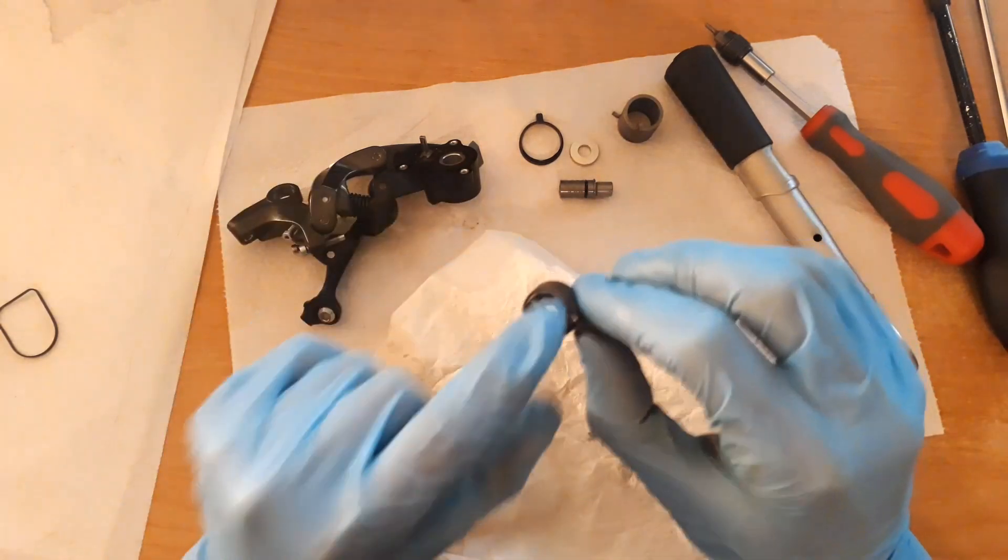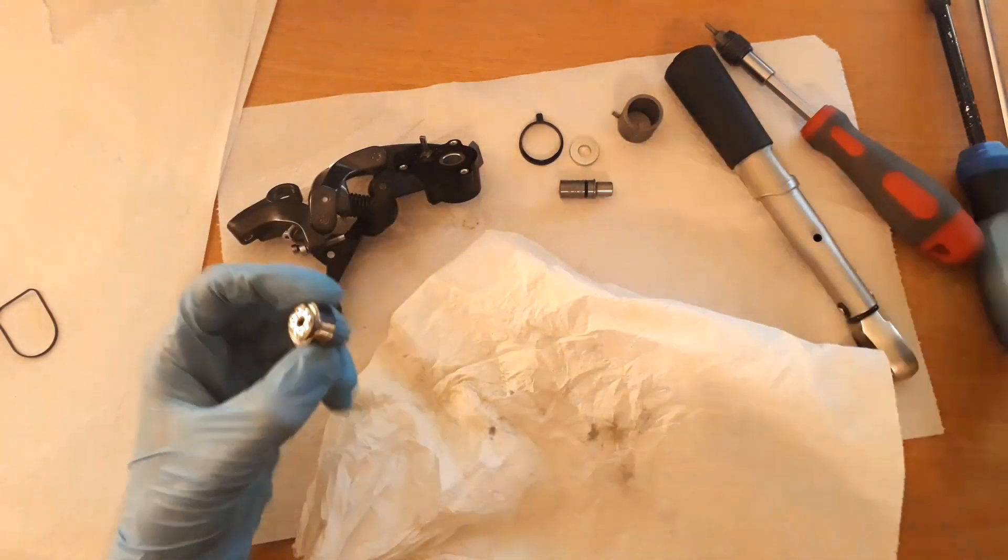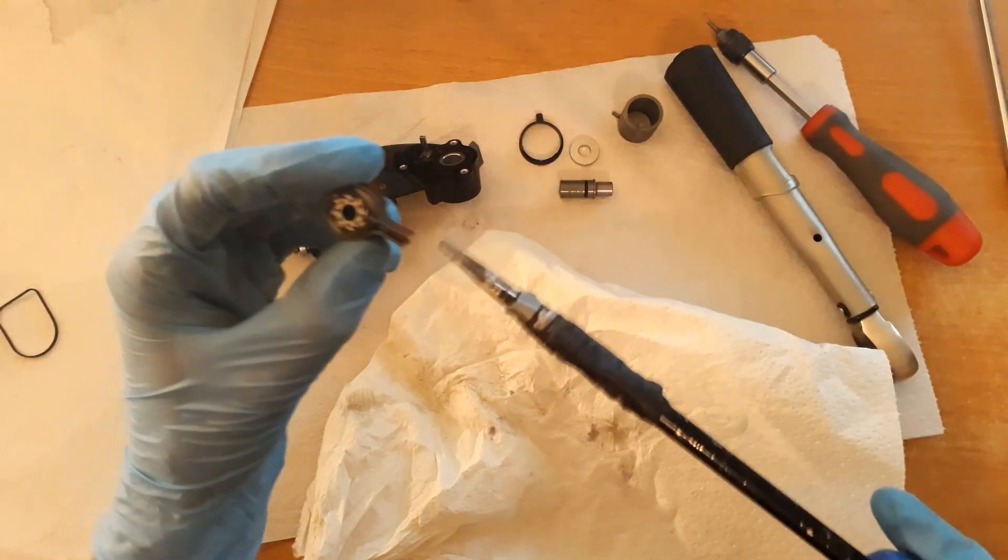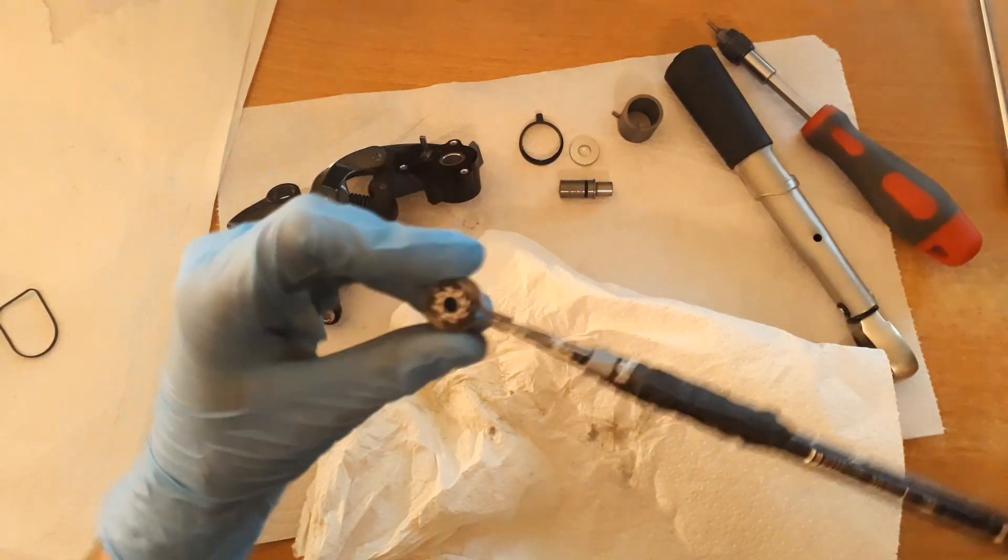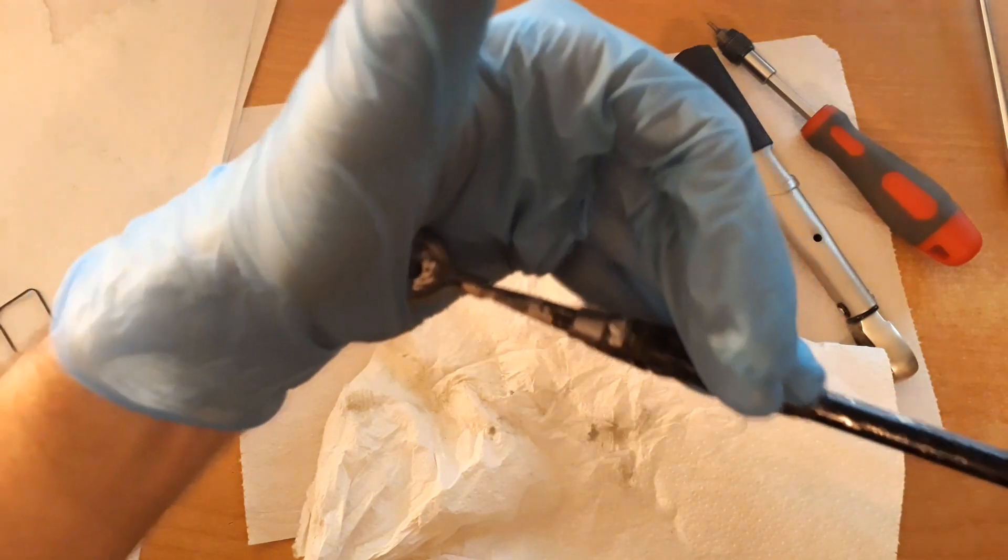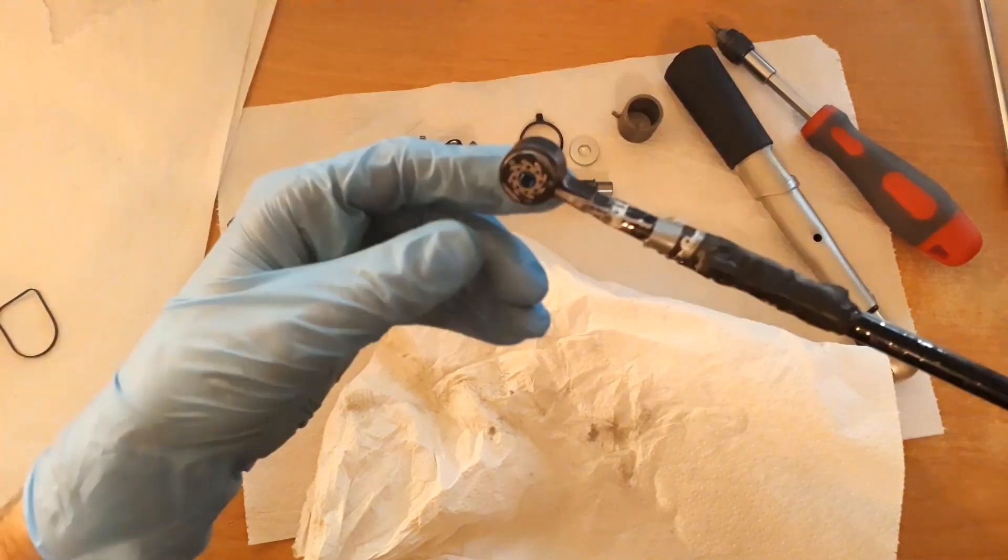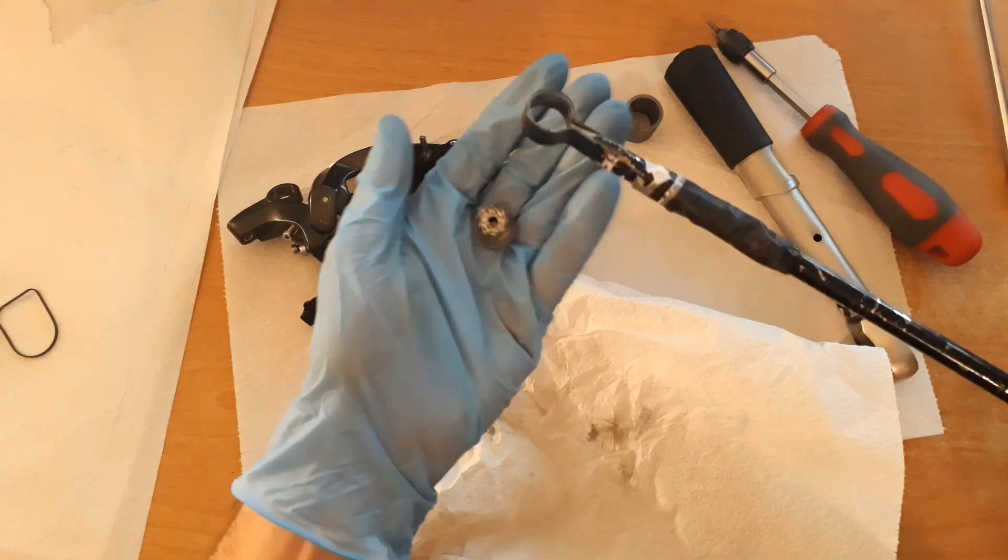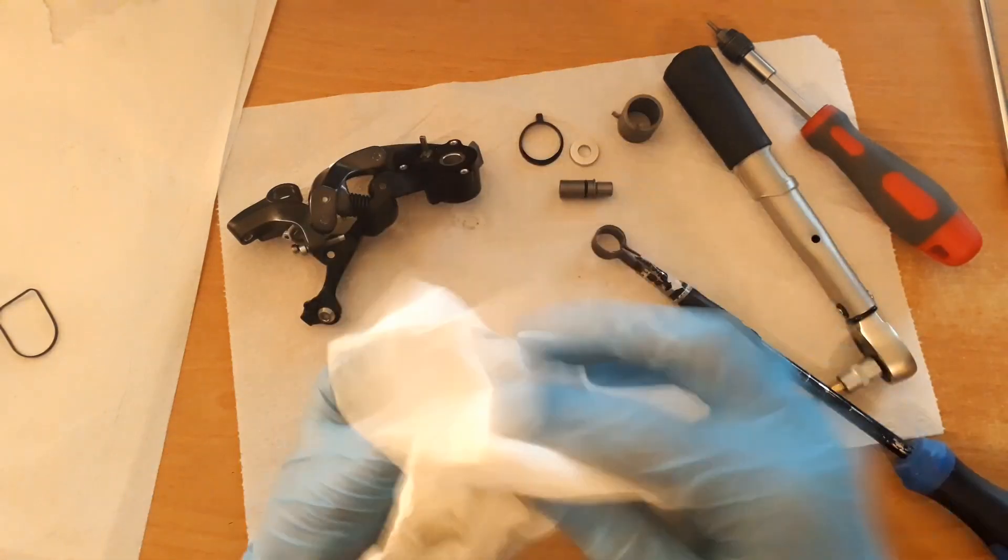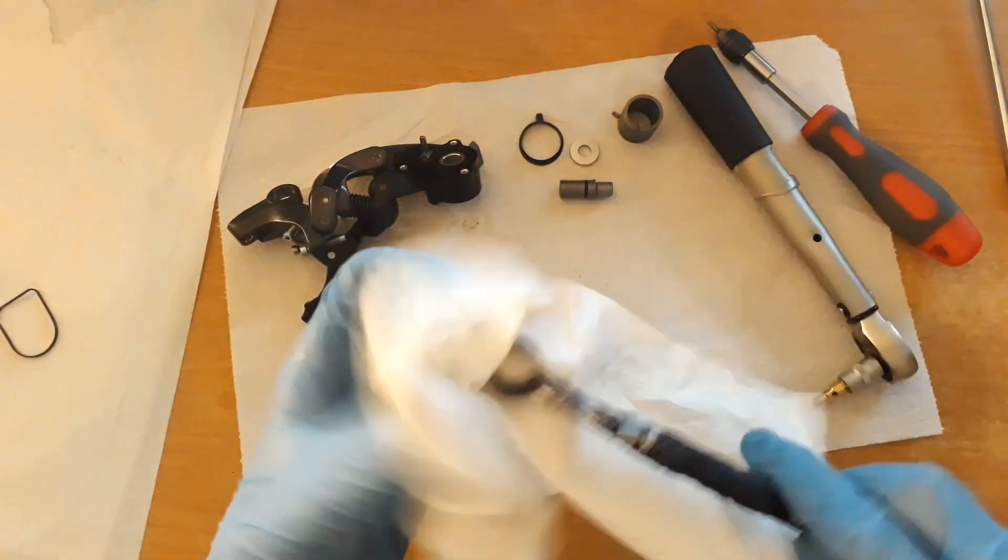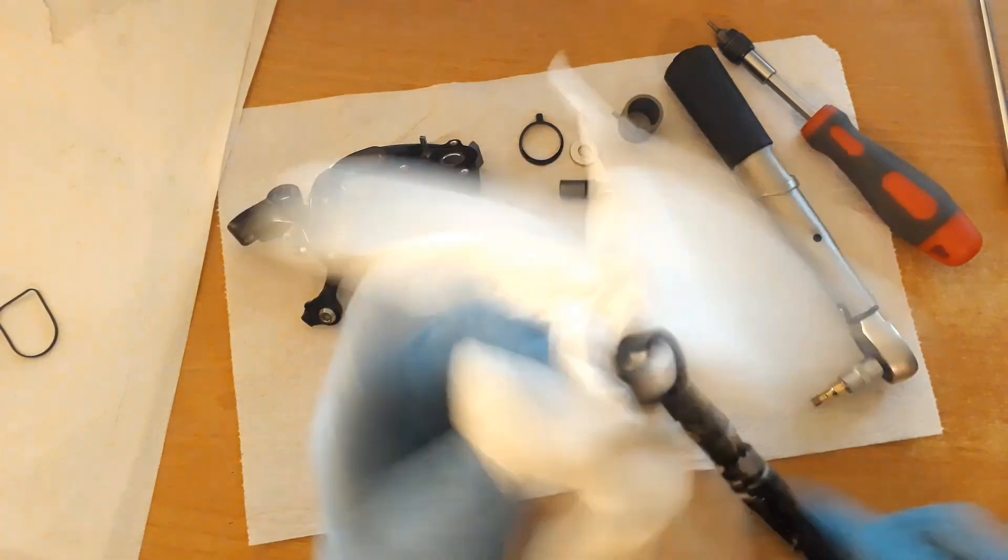We need to remove the inner part from the outer part, and this is where the large screwdriver comes in handy. Just gonna push this in. And now we can easily remove the inner part. Leave the screwdriver in because you will need it to reassemble.